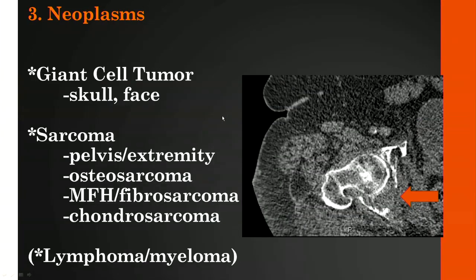Neoplasms have been described with Paget's disease and should be on your lookout. Giant cell tumor—interestingly—has been observed in Paget's, typically in the skull and face, although in this patient we see it in the pelvis. Sarcomas have also been described, typically on the pelvis and extremities, including osteosarcoma, malignant fibrous histiocytoma, fibrosarcoma, and chondrosarcoma. It's unclear whether lymphoma or myeloma are truly associated, but they have been described in Paget's disease as well.